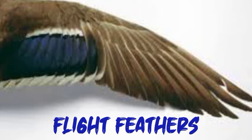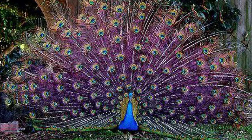The third type of feathers is body feathers. These form a layer on top of down feathers and cover the body of the bird, giving it a shape. So basically, body feathers give shape to the bird's body.